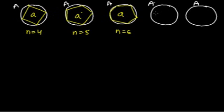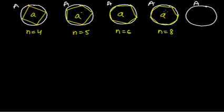Now suppose I am making an octagon — 1, 2, 3, 4, 5, 6, 7, and 8. When we made the octagon, the area has become more and more in the polygon. But the difference between the area of the circle and the polygon is becoming lesser and lesser, from here to here.